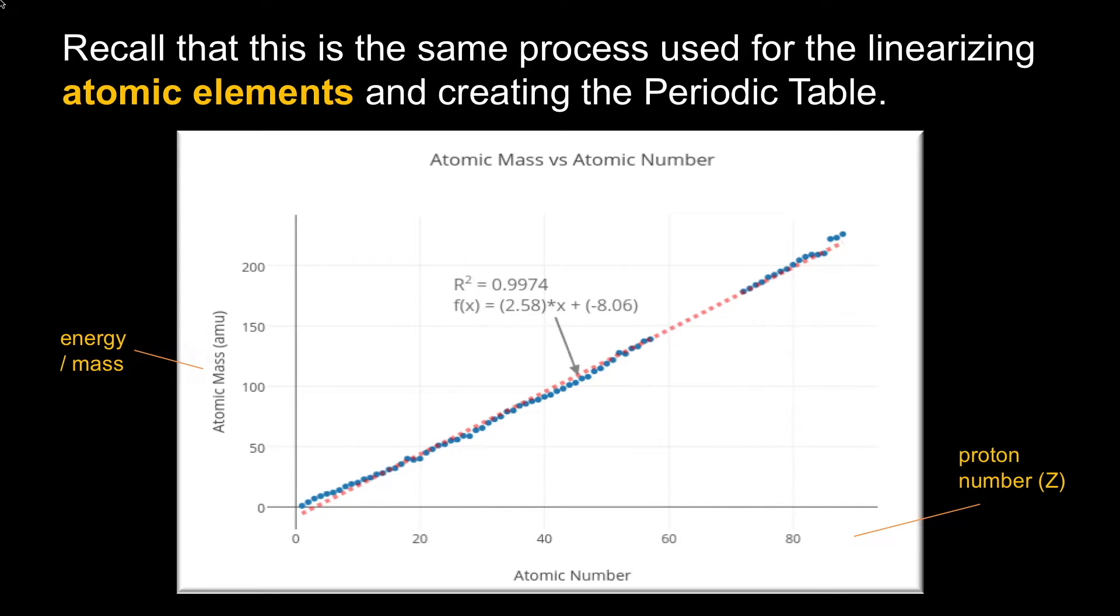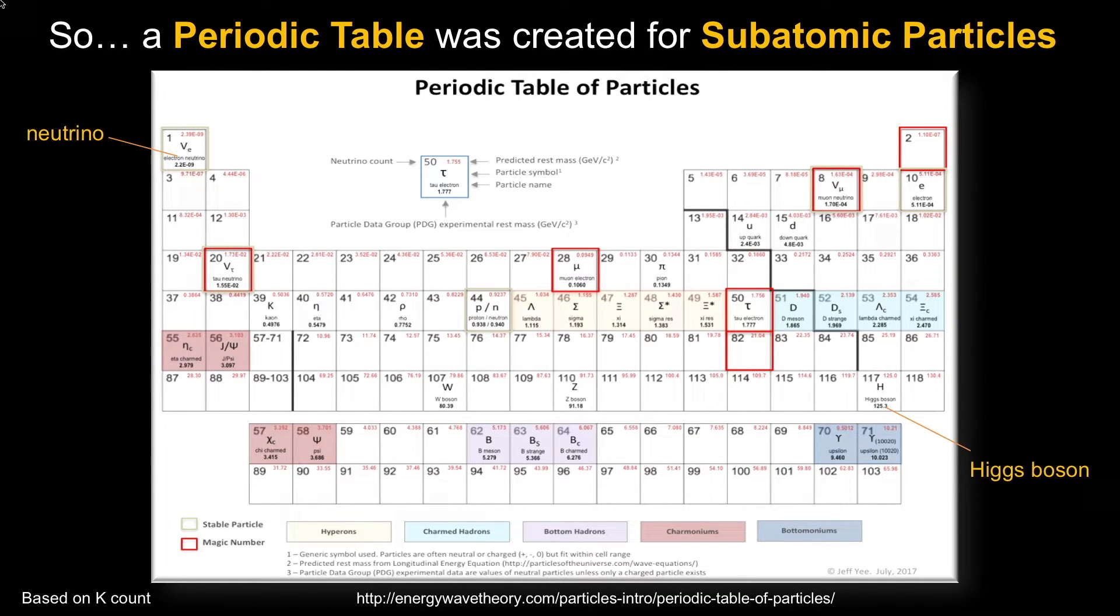For example, if number 60 wasn't already discovered, you know exactly what the mass would be and where to look. That's one coincidence between the particles and atomic elements. It started to group all of this into a periodic table of particles.